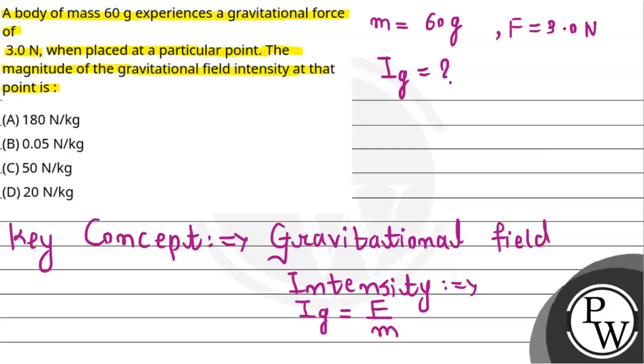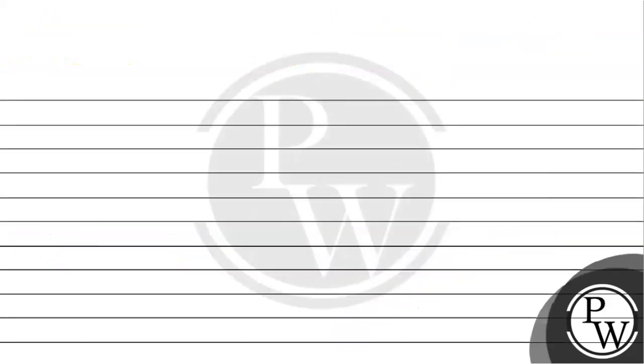So this is the concept we will use here. F is the gravitational force and m is the mass of the given body. Both terms are given here, so we just need to use the formula and we will get the answer.